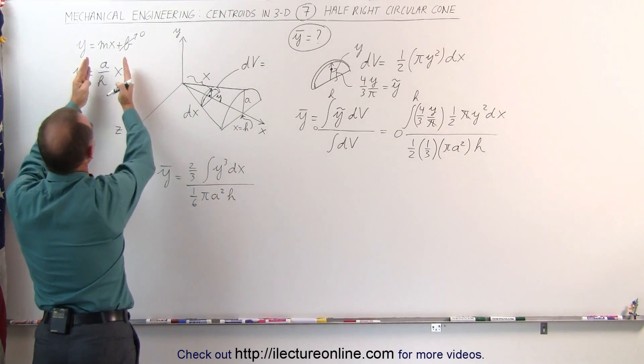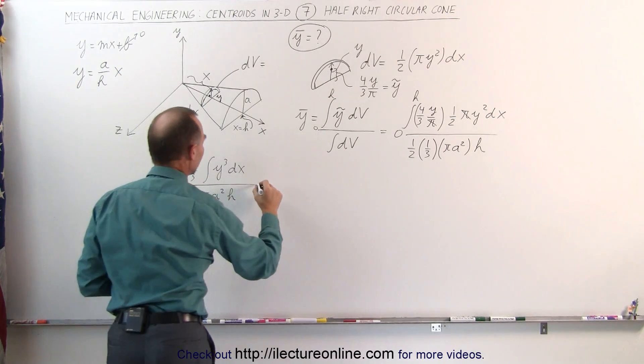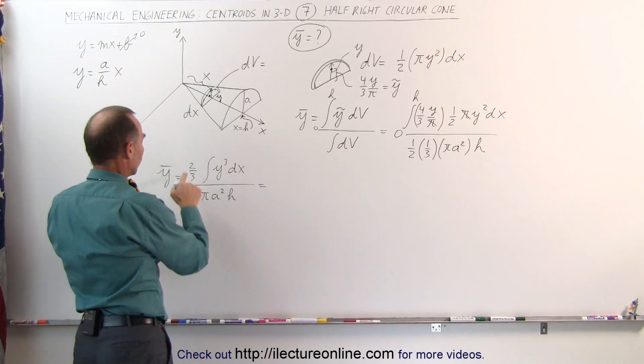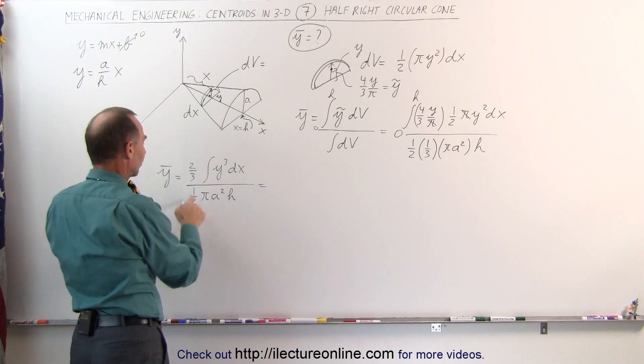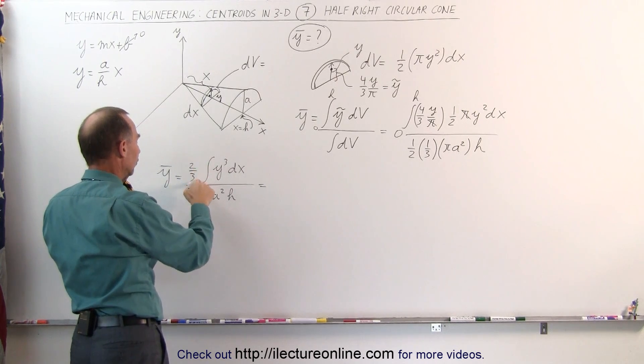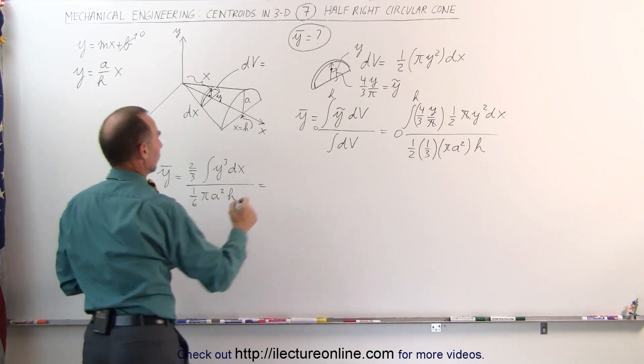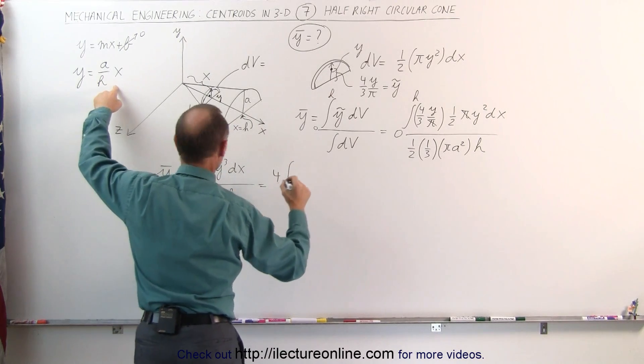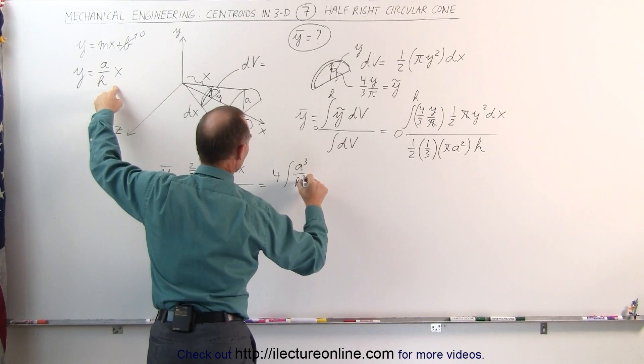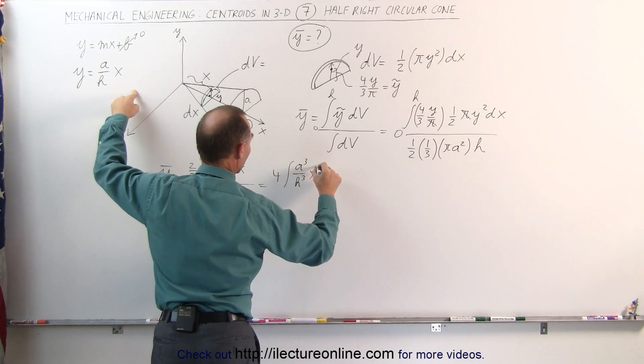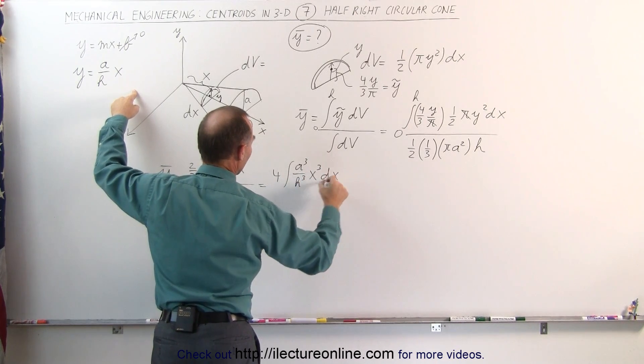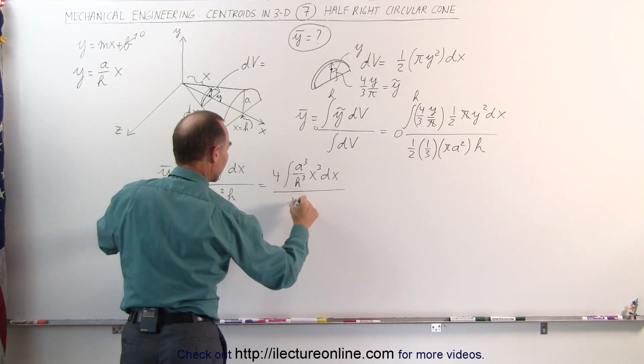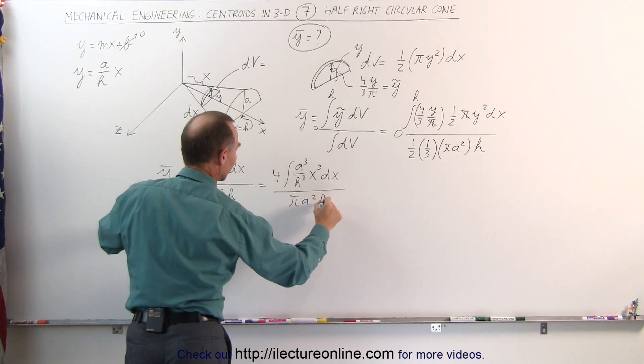So instead of writing y cubed, we can write this quantity cubed. Which means that this can be written as, 2 thirds divided by 1 sixth, the sixth goes to the top, that's 12 thirds, that's equal to 4. So we can simplify that by 4 times the integral of a to the third, divided by h to the third, x to the third, times dx. And the denominator, the 1 sixth is now gone, and so we have pi a squared times h.